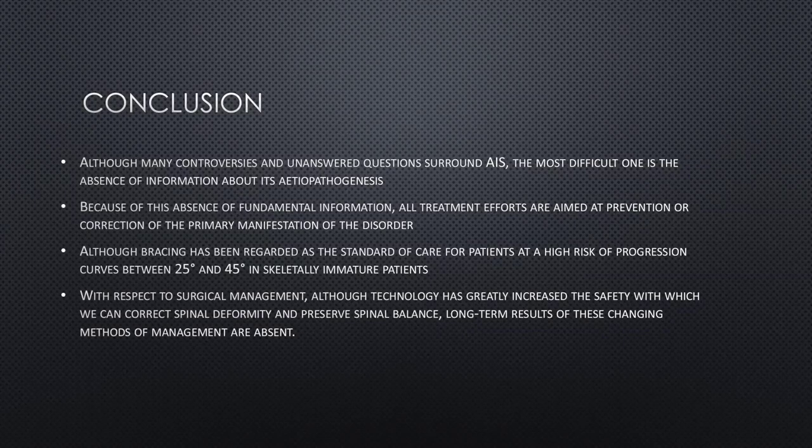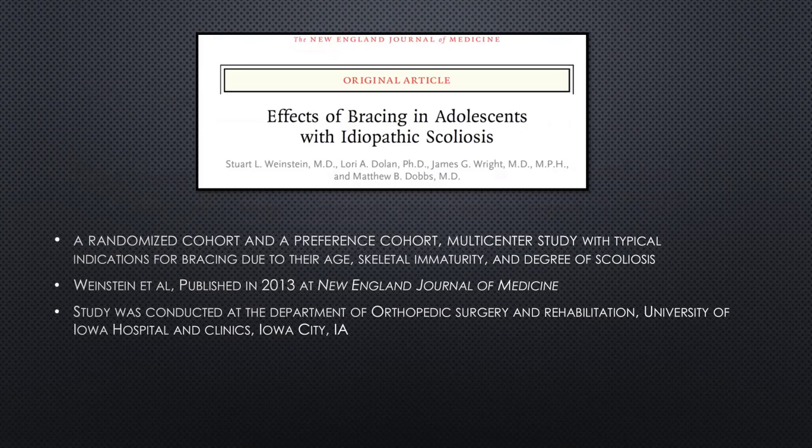The main take-home point from this paper — and the reason it was so highly cited — was the conclusion that there is no known common underlying cause. They put the 'idiopathic' in AIS. They ran through treatment algorithms, but this was published in 2008 before the bracing paper we're about to discuss, so there was inconclusive evidence at the time on the effects of bracing. They looked at so many different things for pathogenesis but didn't find a unifying answer.